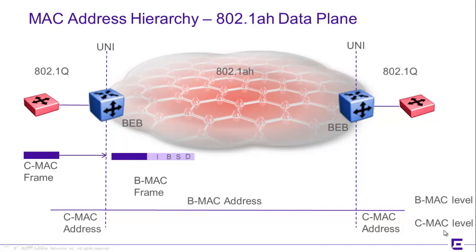There are different MAC levels. The CMAC level is at the subscriber edge — from the hands-on series, connectivity fault management levels six and seven. The BMAC level is what we term the SPBM level, handled at CFM levels four and under. This shows the inherent separation of the user subscriber edge from the service core.